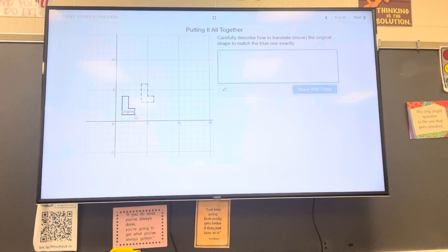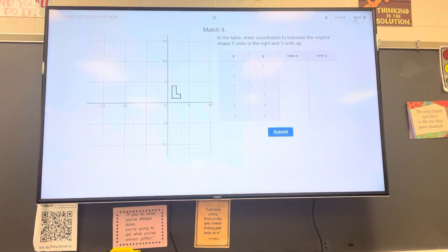Carefully describe how to translate or move the original shape to match the blue one exactly. So it looks like we are going right one, two, three—so right three—and up how many? Two.